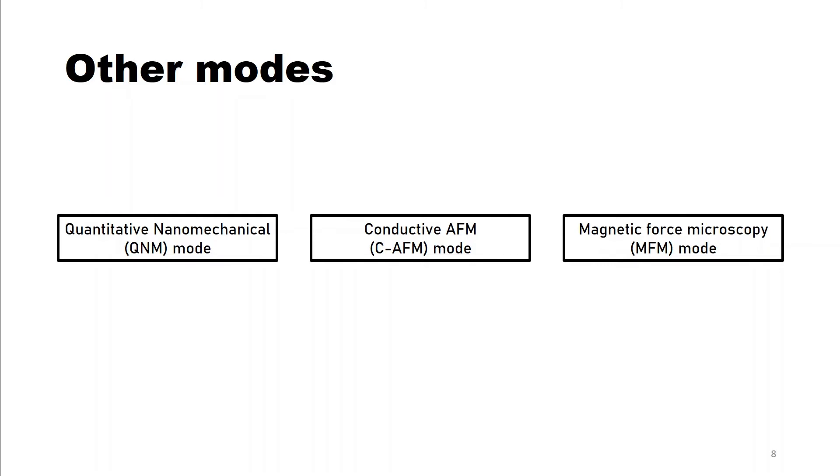Conductive AFM tells you something about the conductivity of your sample of course. And magnetic force microscopy mode makes you obtain information about the magnetic properties of your sample.